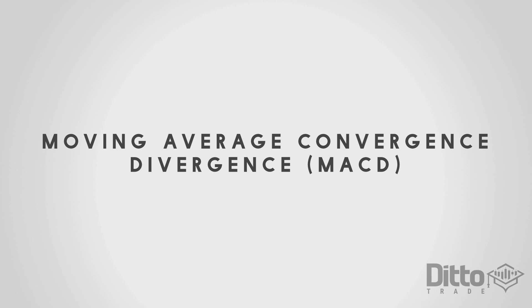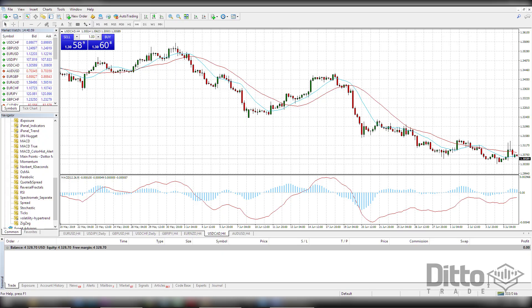Before we look into some of the properties such as the histograms, let's first look at what the MACD is. MACD is short for Moving Average Convergence Divergence. It was created by Gerald Appel in the late 1970s. It can help us reveal changes in the strength, direction, momentum and duration of trends in the market price.